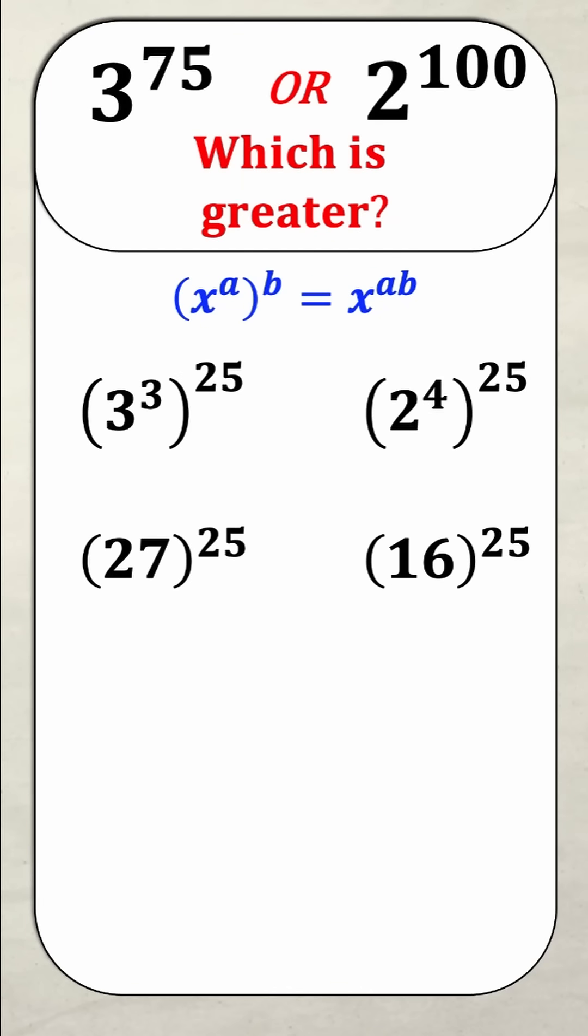Well now when I'm comparing them they're both raised to the power of 25, so all I need to do is take a look at the value inside the brackets. Obviously 27 is greater than 16 and so therefore I can deduce that 3 to the power of 75 is greater than 2 to the power of 100. Did you get this one right? Let me know in the comments.